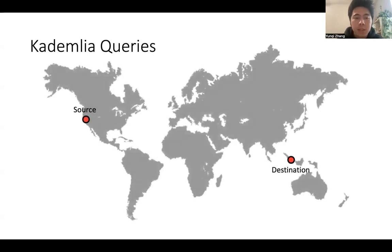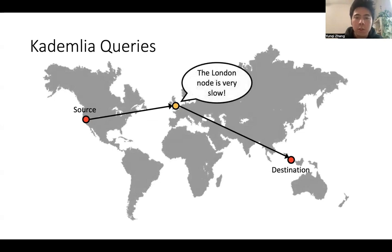Even if we don't have zigzags, it can still be inefficient. Suppose we have source node in California and destination node in Singapore. First, we forward the query to London. And then we forward the query to the destination, Singapore. This can still be inefficient if the London node is slow. However, vanilla Kademlia doesn't care about this.